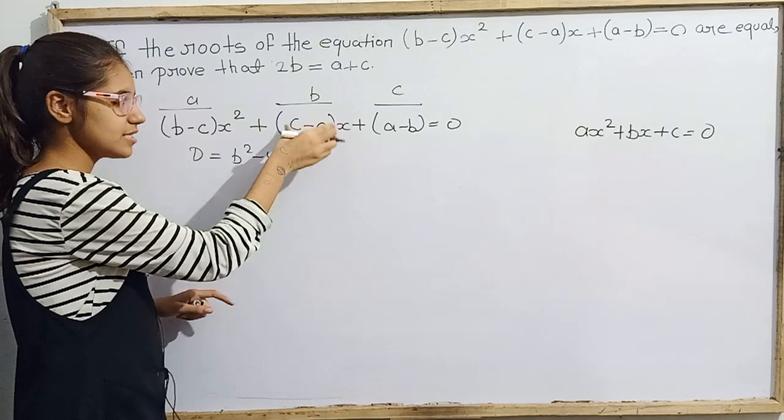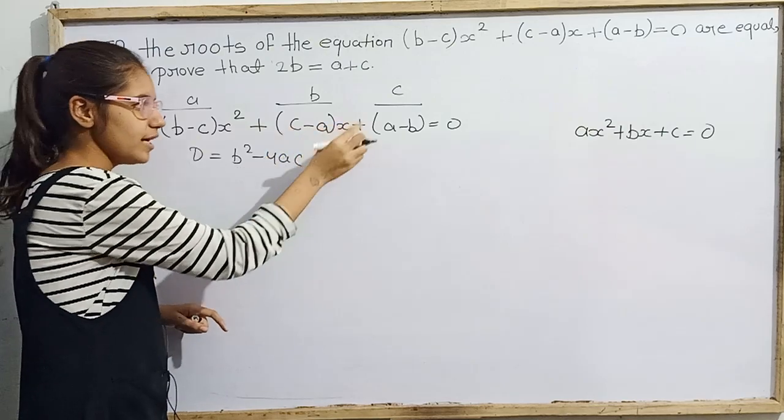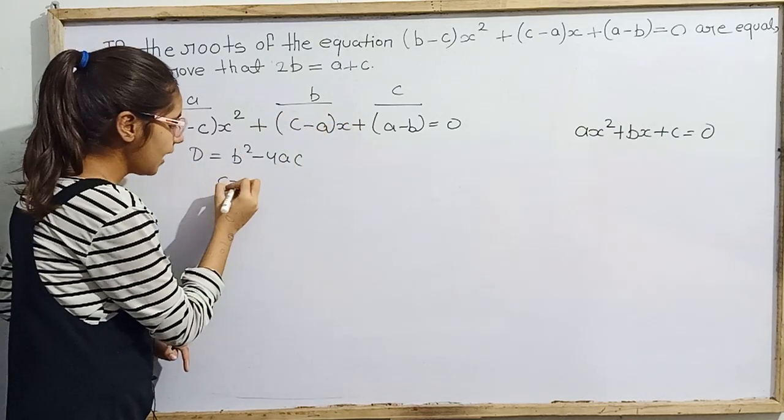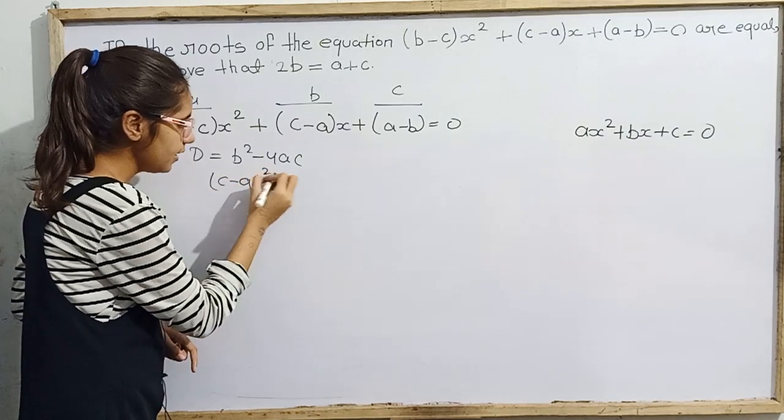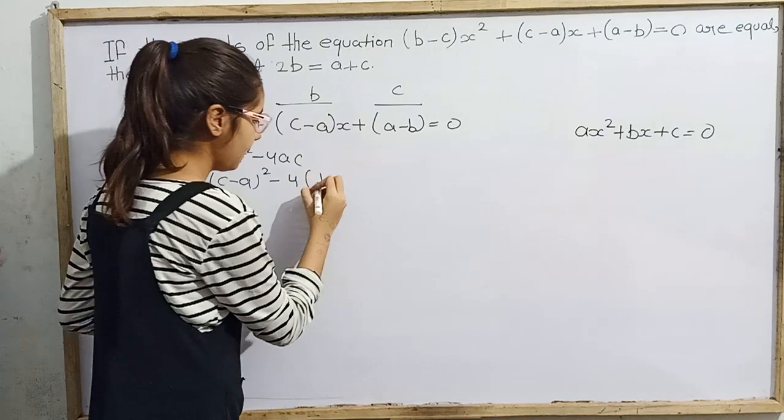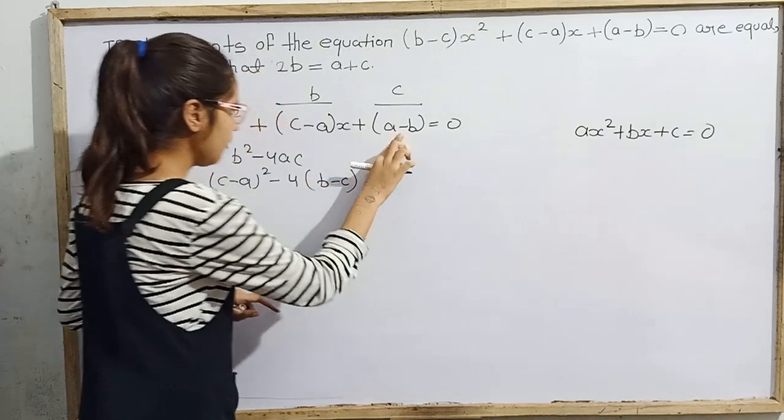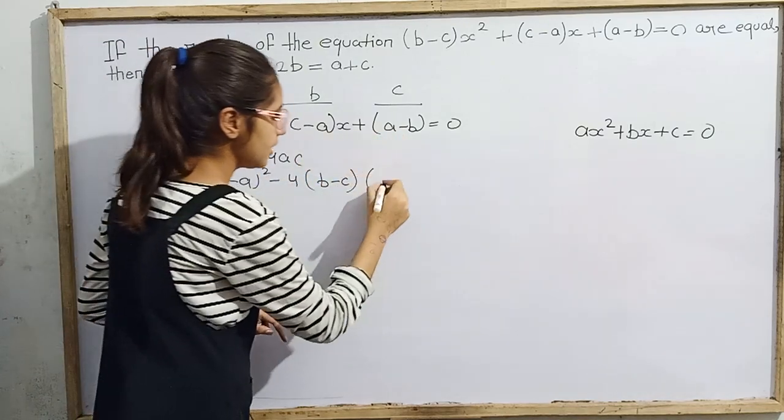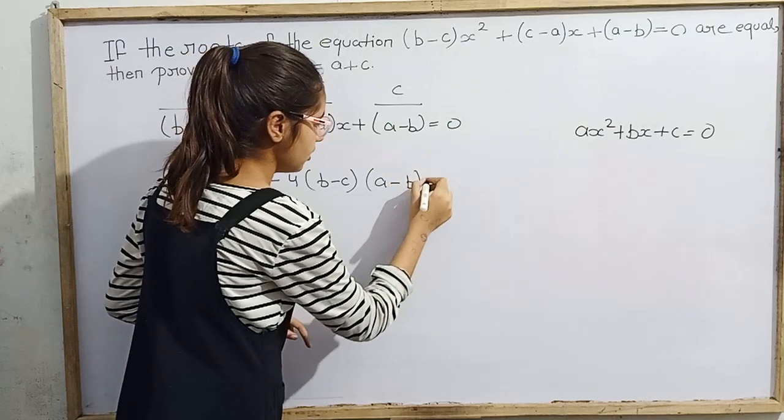We will not write x. This is our b and this is finally our c. Now what we have to do? B square. So what is our b? That is c minus a. So c minus a whole squared minus 4. What is our a? B minus c. And what is our c? That is a minus b equal 0.